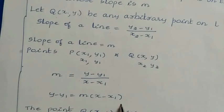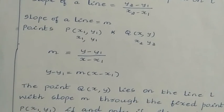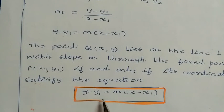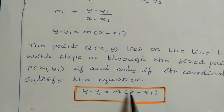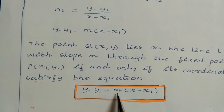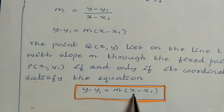So the equation of a straight line in point-slope form is: y − y1 = m(x − x1). In this equation, m is the known slope of the line, (x1, y1) is the known point on the line, and (x, y) represents any arbitrary point on the line.